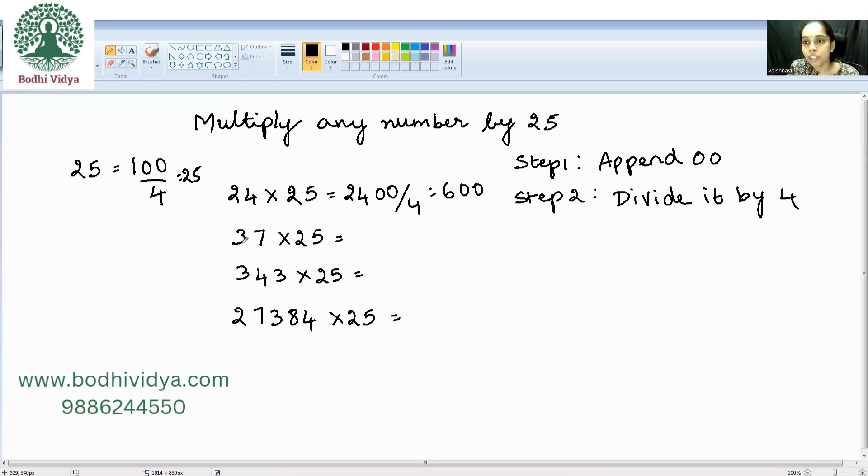Now this example. So it is 3700 divided by 4. See there is no need to write it every time. We can try to visualize it mentally.